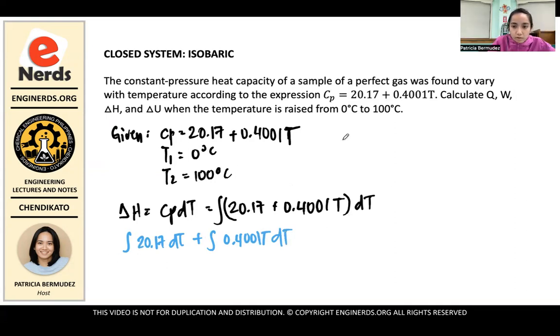So for integration, what we'll do first is to distribute dT inside these two. So it will be the integral of 20.17 dT plus the integral of 0.4001T dT. And then we know from the rules of calculus that constant plus dx is equals to Cx. And then the integral of x dx is equals to x squared over 2 plus a constant. But for here, we won't include the constant yet.